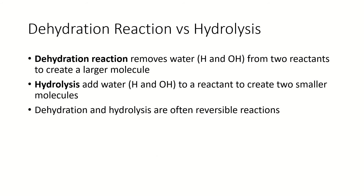So let's talk about these two reactions — dehydration and hydrolysis. Dehydration is going to remove water from two reactants to create a larger molecule. Hydrolysis is going to split water to create two smaller molecules. Often these are reversible reactions, so you can put something together and take it back apart. In cows' mammary glands, that lactose sugar gets made by putting galactose and glucose together in a dehydration reaction that produces water. And then in your body, if you drink milk and make lactase, the water is added and split.